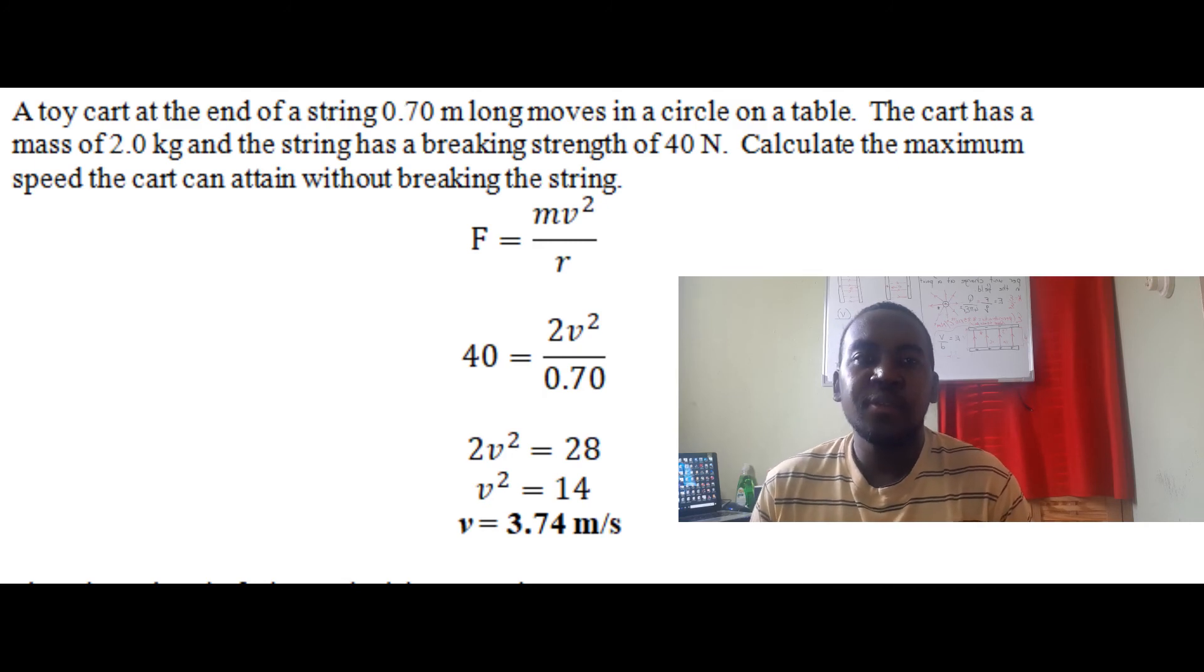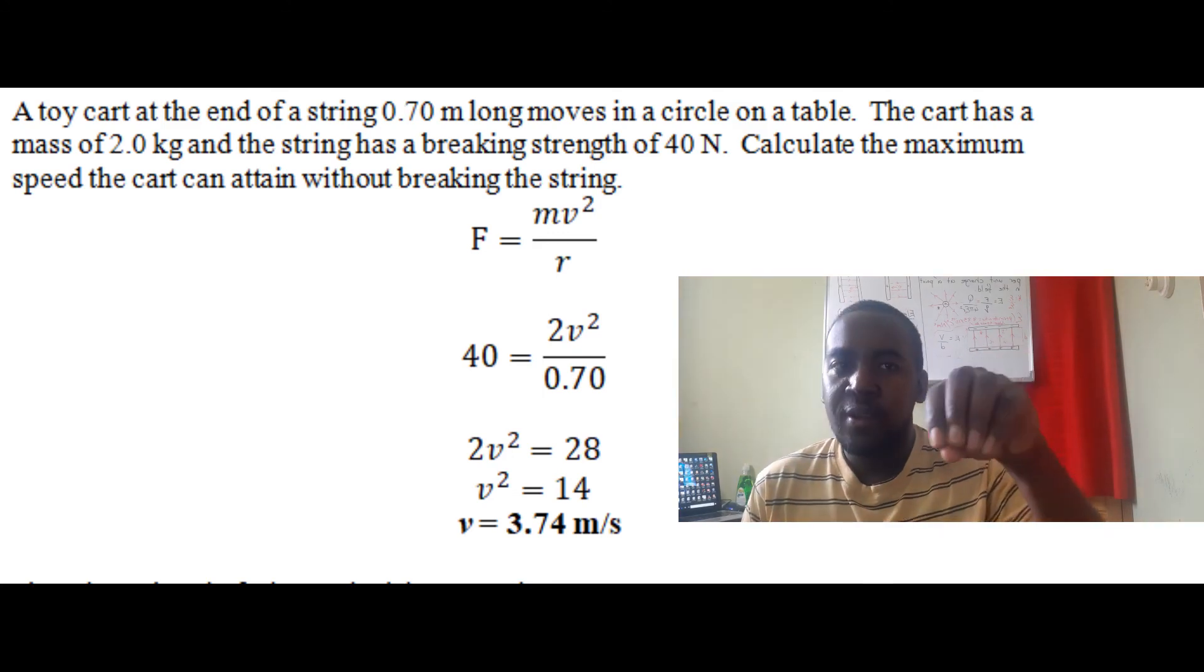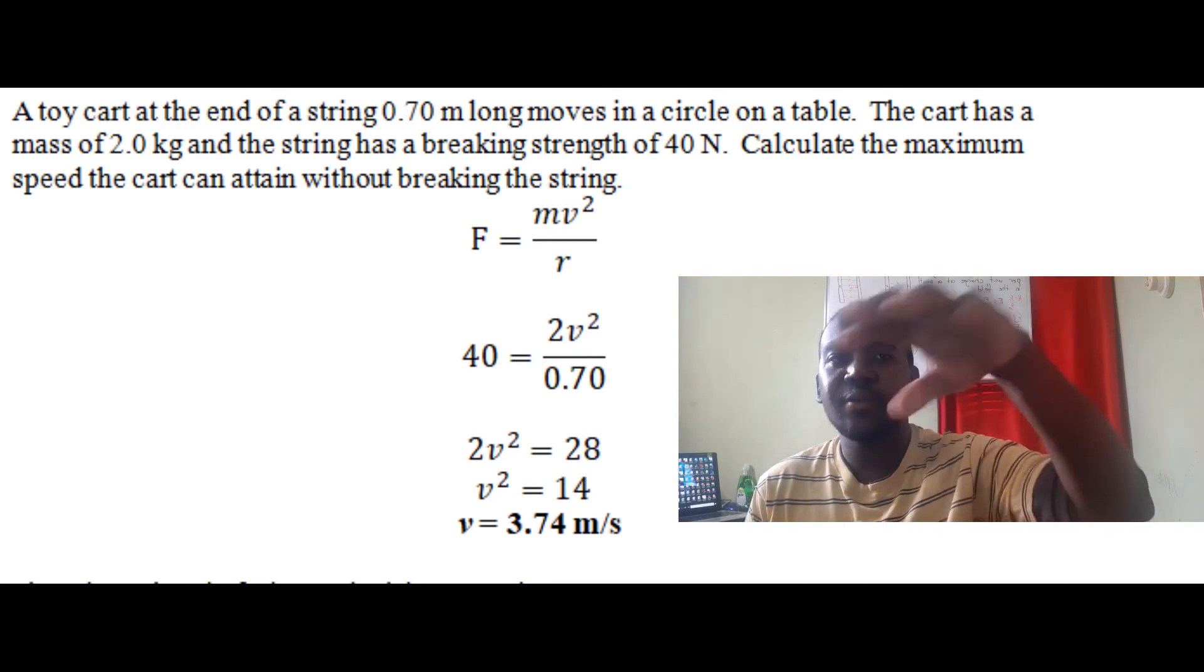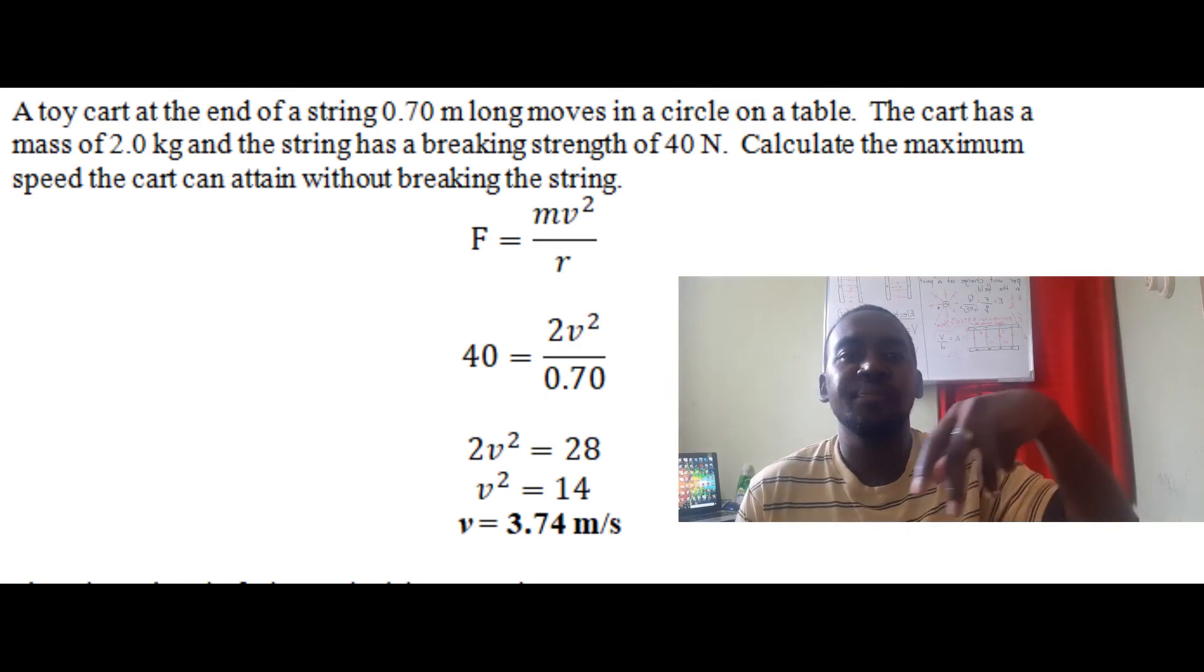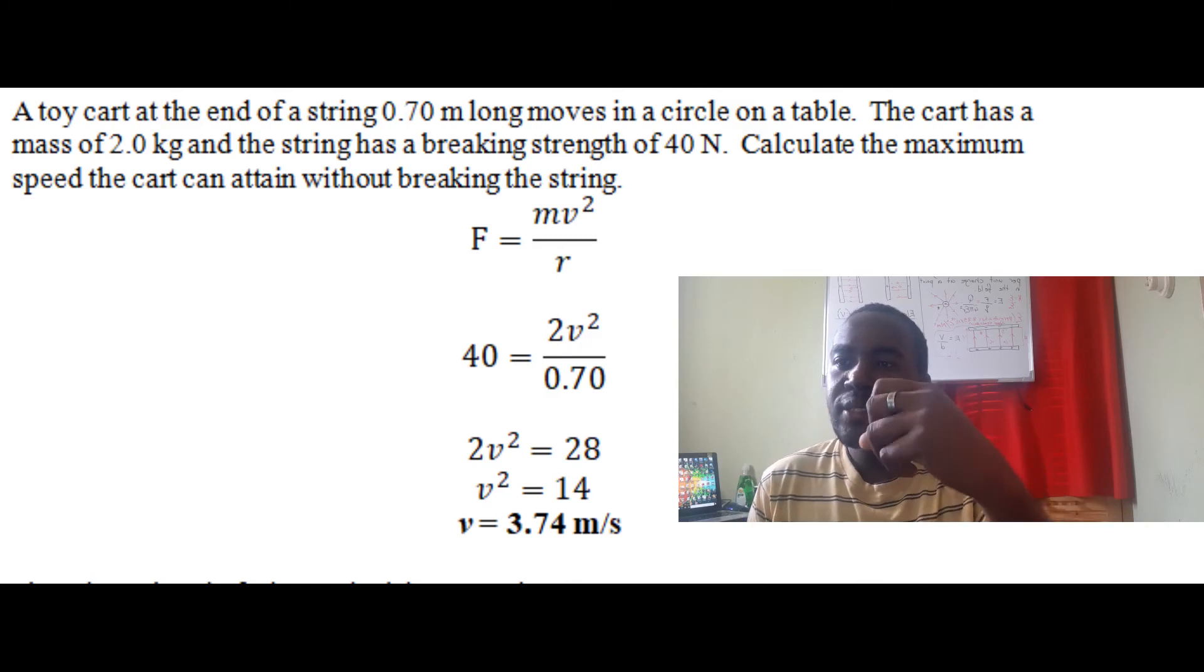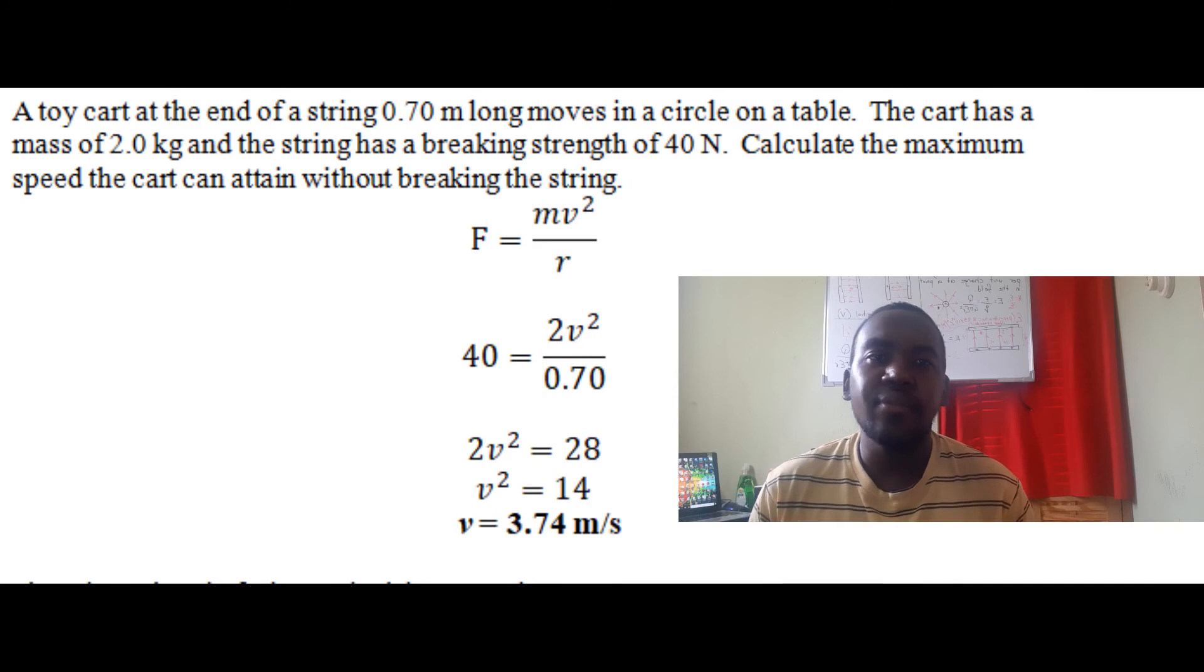In this case, the string is on the table being whirled around, creating a horizontal circle. Because the breaking strength is 40 N, the maximum velocity has to be attained when the force is 40.